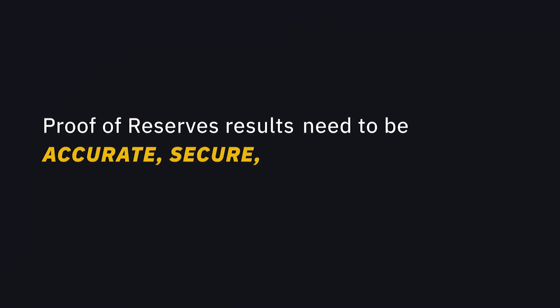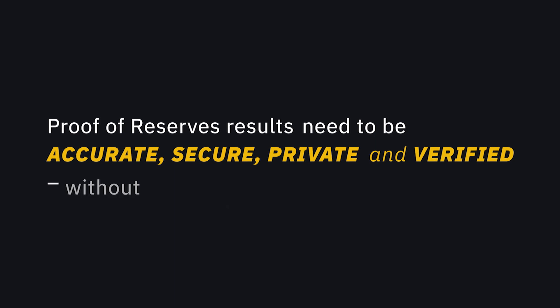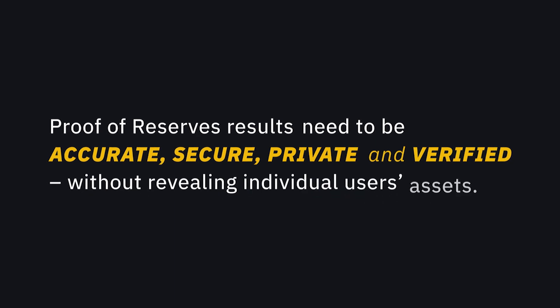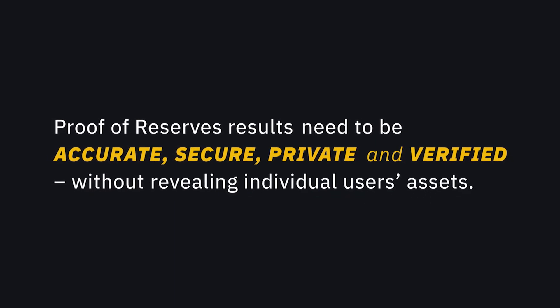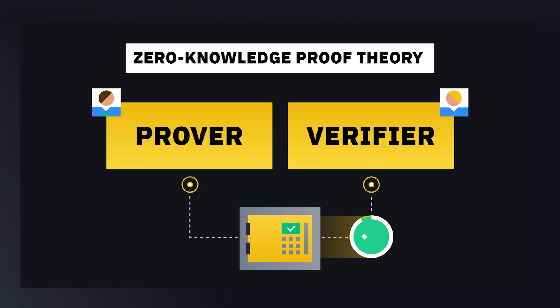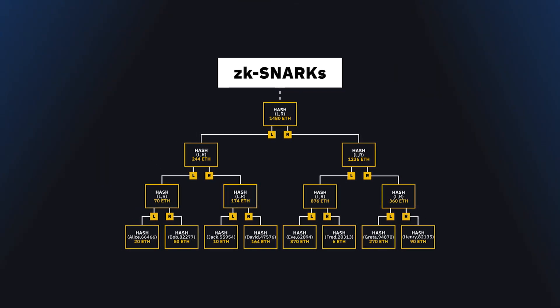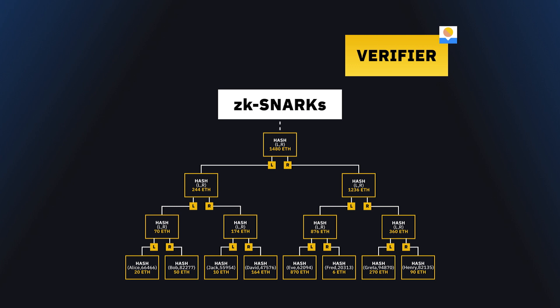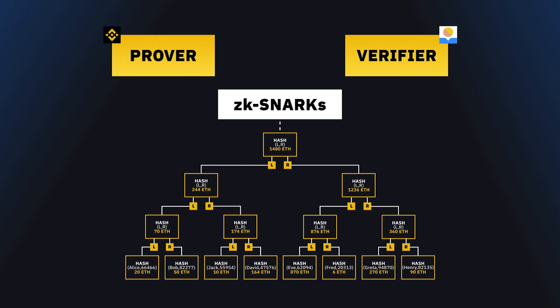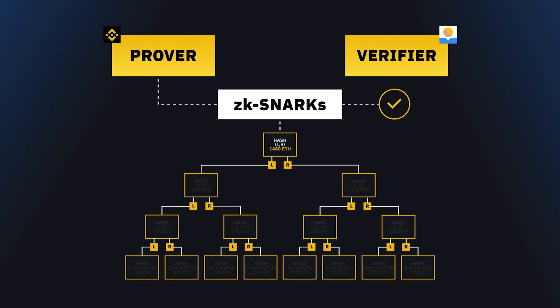Proof of reserves results need to be accurate, secure, private, and verified without revealing individual users' assets. Remember the locked safe and the ZK-SNARKs we talked about? With ZK-SNARKs plugged into the Merkle tree, the user is the verifier and Binance is the prover. ZK-SNARKs use cryptographic algorithms to scramble up sensitive information so that it's hidden from the other party while providing that party with the necessary proof requested.